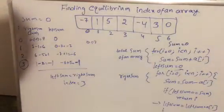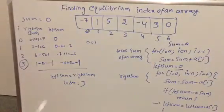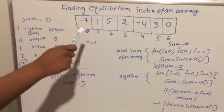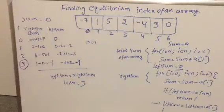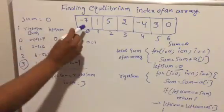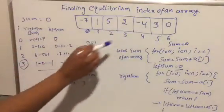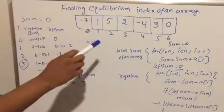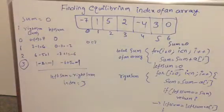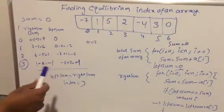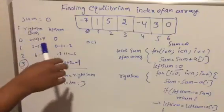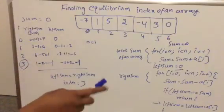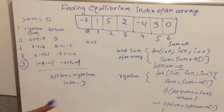Our problem is finding the equilibrium index of an array. Given an array, the equilibrium index means the sum of elements on the right side is equal to the sum of elements on the left side.